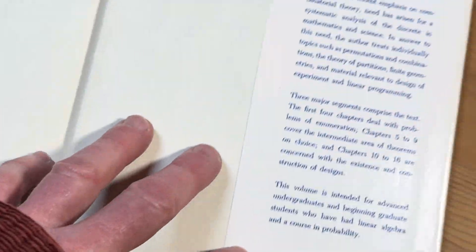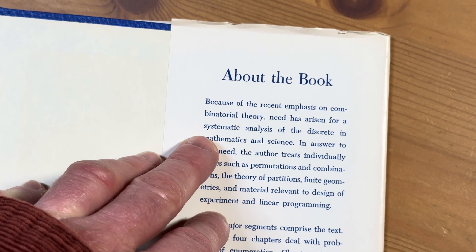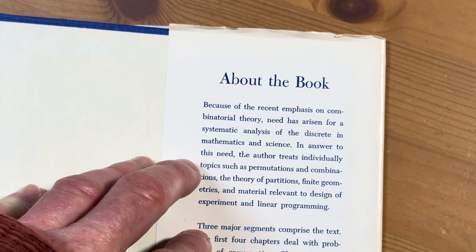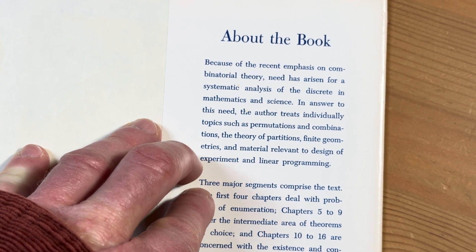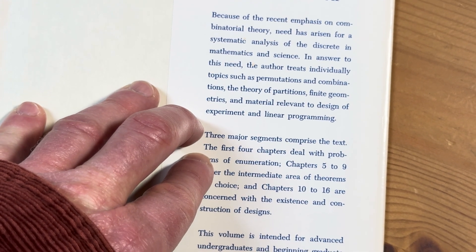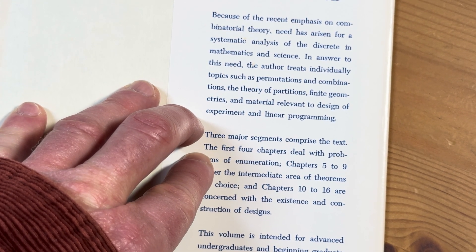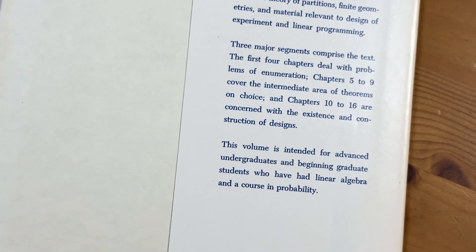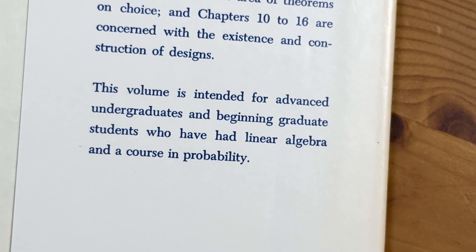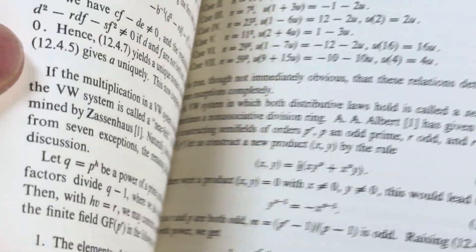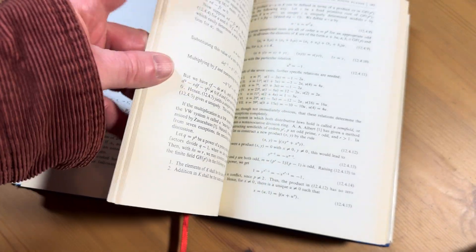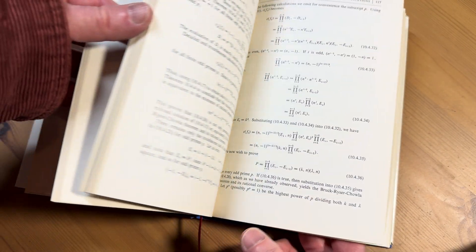Oh, here we go — about the book. Because of the recent emphasis on combinatorial theory, need has arisen for a systematic analysis of the discrete in mathematics and science. In answer to this need, the author treats individually topics such as permutations and combinations, the theory of partitions, finite geometries, and material relevant to design of experiment and linear programming. This volume is intended for advanced undergraduates and beginning graduate students who have had linear algebra and a course in probability. So you have to have a certain level of mathematical maturity.